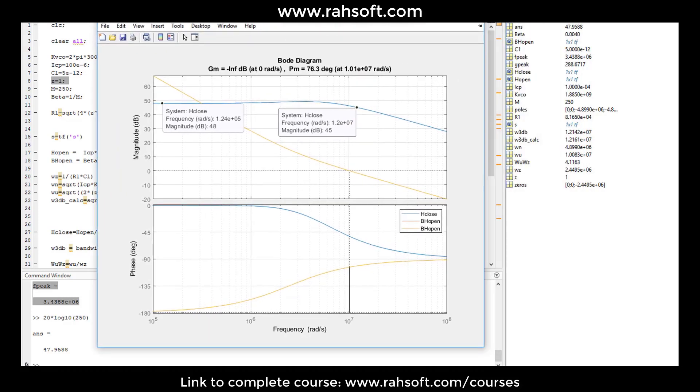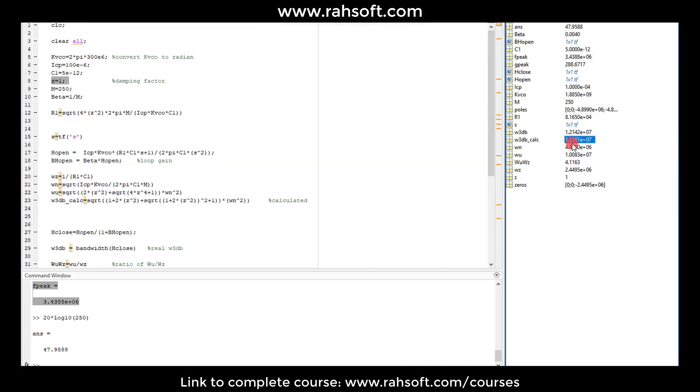And also, I calculated here. So the calculated omega 3dB is 12.16 megahertz. But what the system gives me is 12.14 megahertz, which they're very close.